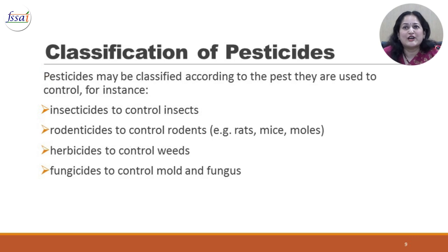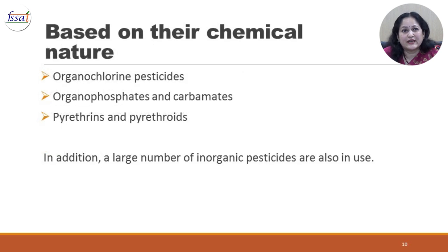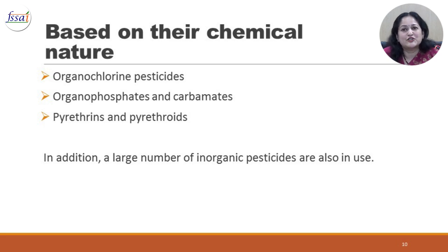Pesticides can be classified according to the pests they control: insecticides for insects, rodenticides for rodents like rats, mice, and moles, herbicides to control weeds, and fungicides to control mold and fungus. Based on their chemical nature, pesticides can also be classified as organochlorine pesticides, organophosphates and carbamates, pyrethrins and pyrethroids. In addition, a large number of inorganic pesticides are also in use.